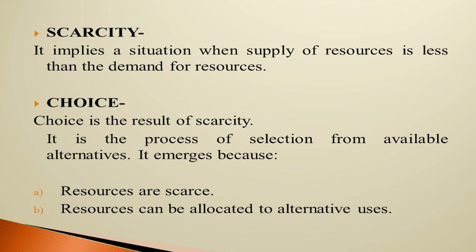Choice arises because resources are limited and can be allocated to alternative uses. For example, we have land which has multiple uses — we can use land for production, house construction, or hospitals. It depends on us how to use our resources, so we give priority to one alternative use. This is how choice arises.